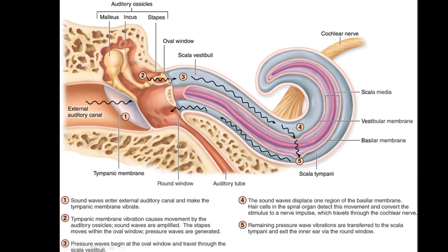The stapes is embedded in the oval window, which opens to the beginning of the scala vestibuli. The movement causes pressure waves in the perilymph of the scala vestibuli. Those pressure waves travel through the cochlea and at some point cross over through the scala media, moving the organ of Corti so the hair cells interact with the tectorial membrane and generate action potentials sent to the brain. The pressure waves then continue into the scala tympani.